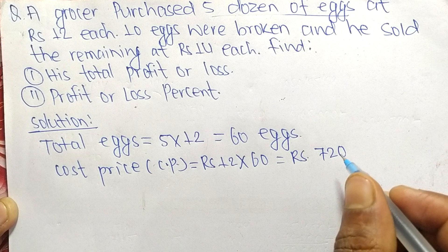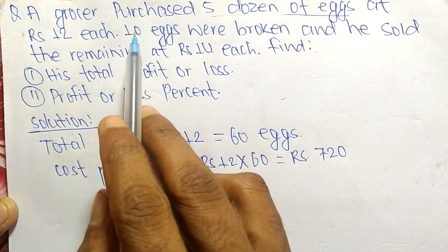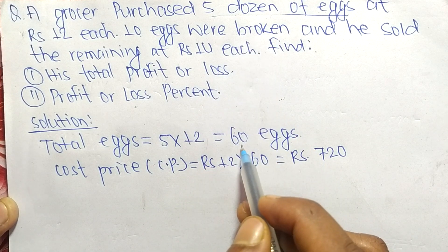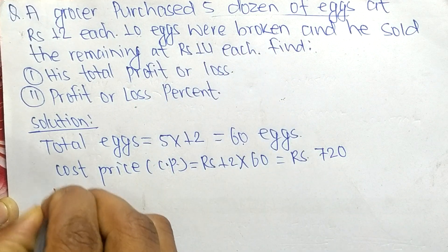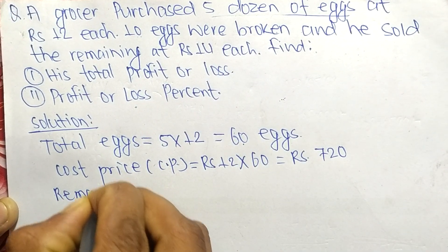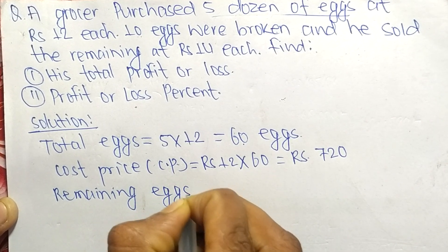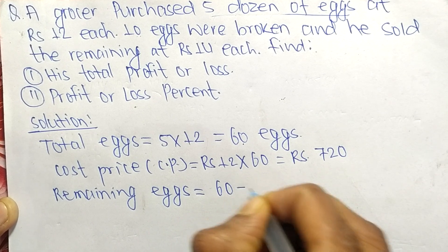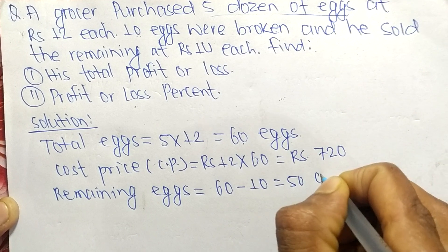10 eggs were broken. Total eggs are 60, and among them 10 were broken, so remaining eggs = 60 - 10 = 50 eggs.